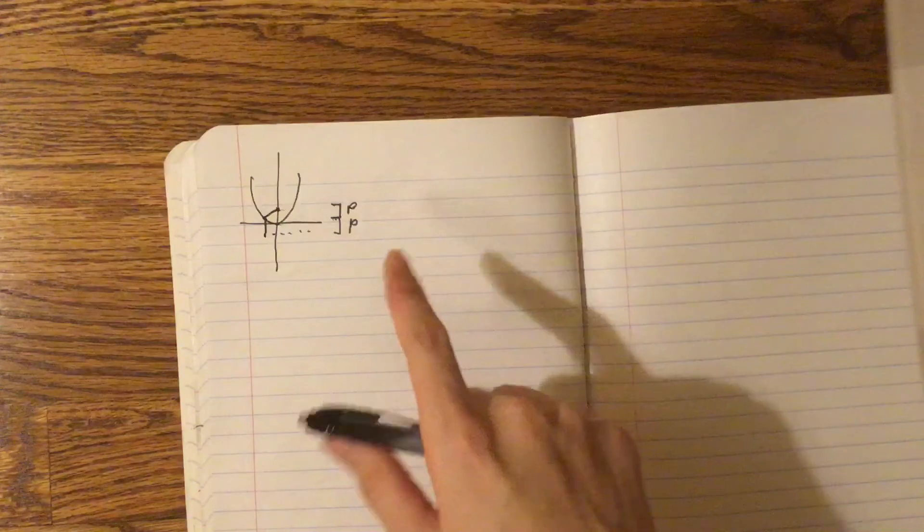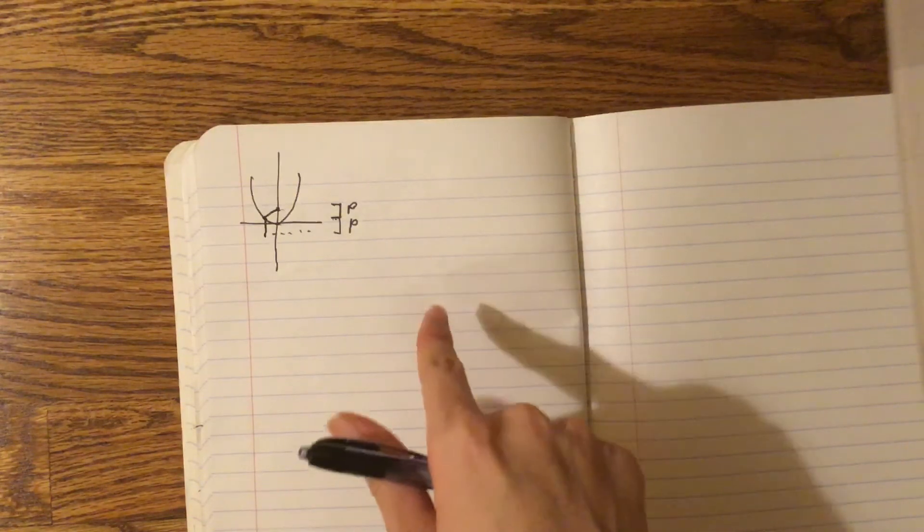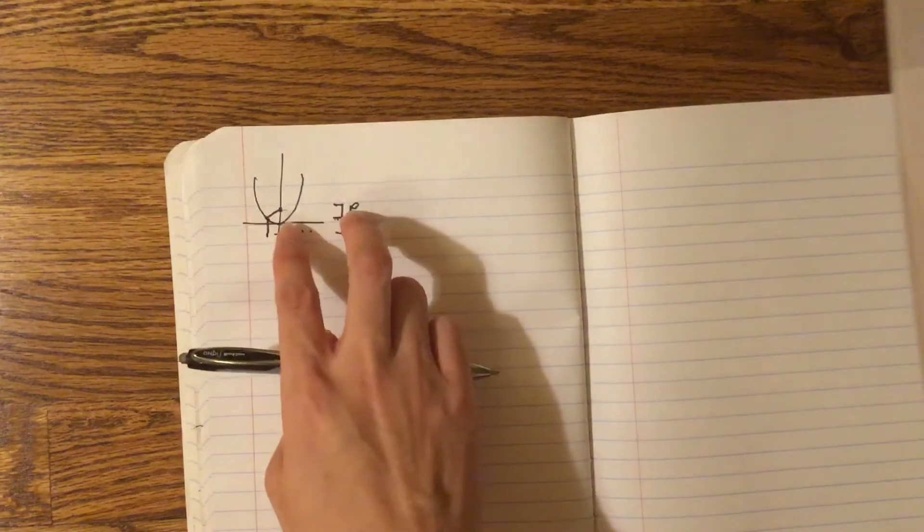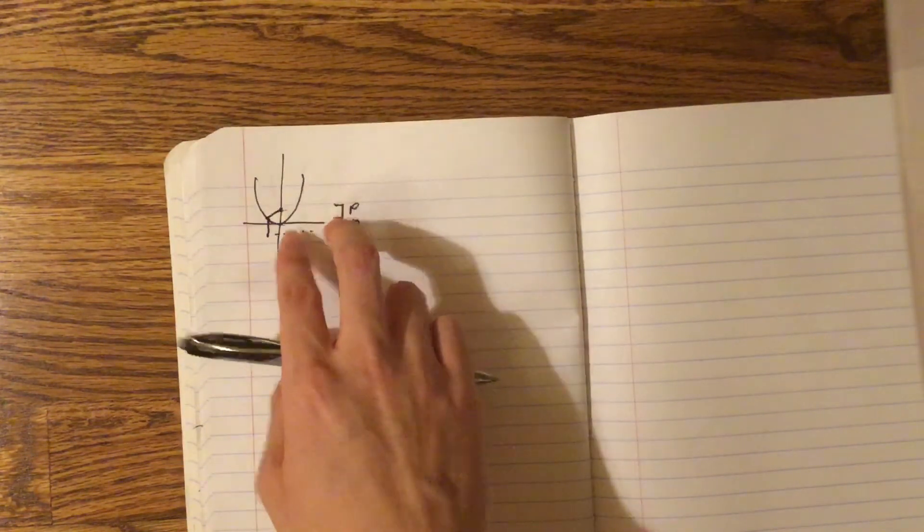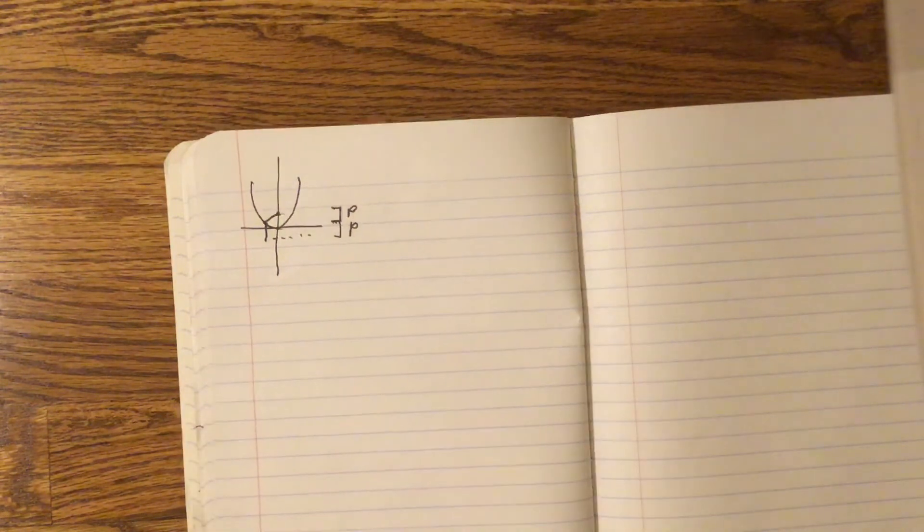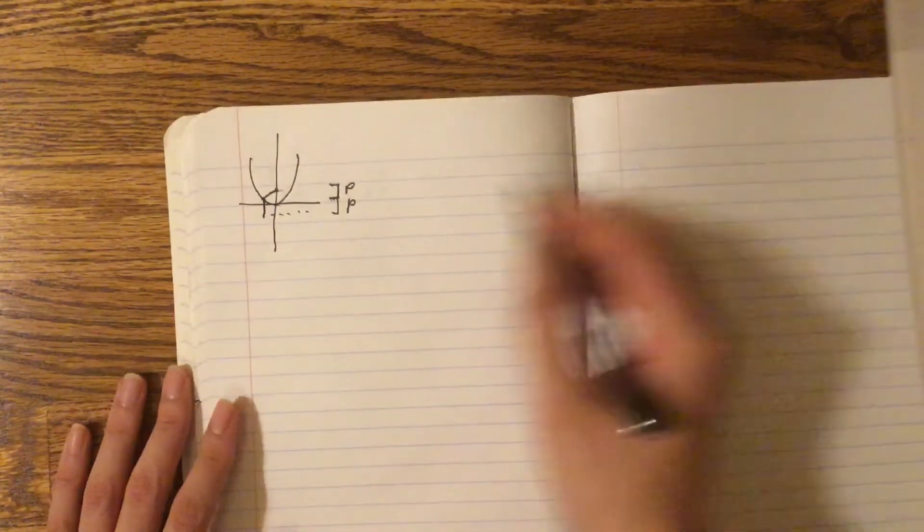And here's the outline of the proof. So instead of assuming that a parabola equals y equals x squared, I'm going to assume that the parabola has these properties, and then from there, if I can get those properties into y equals x squared, then the proof will be complete.